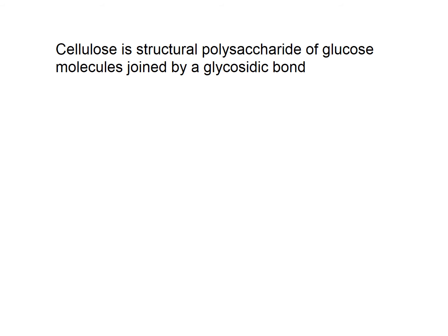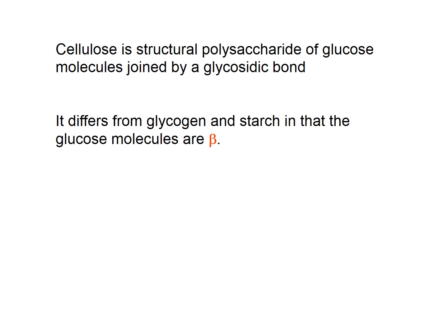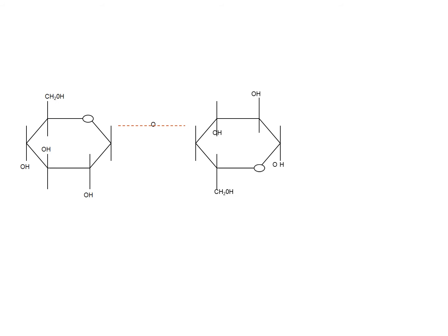The property of cellulose is quite different to that of glycogen and starch. The structure, however, also involves glucose. There are glycosidic bonds joined by a condensation reaction. The difference here, which is quite significant, is that alpha glucose is not involved, but instead the isomer of glucose, which is beta glucose.